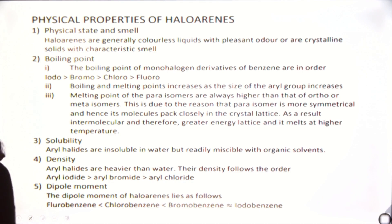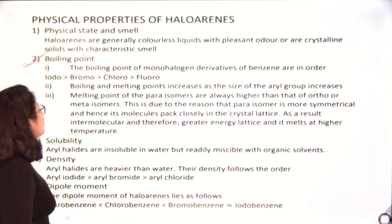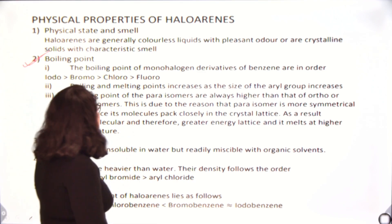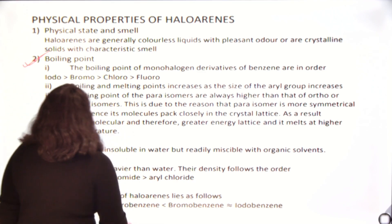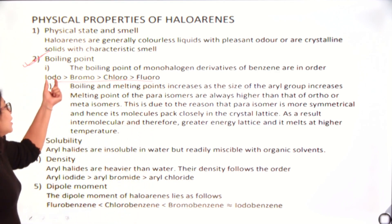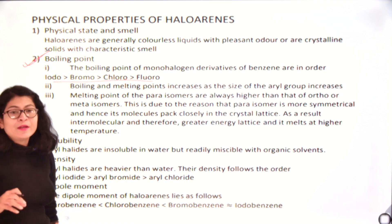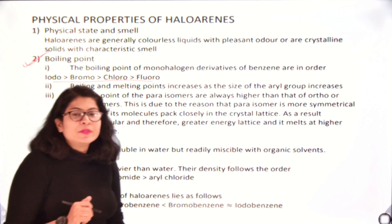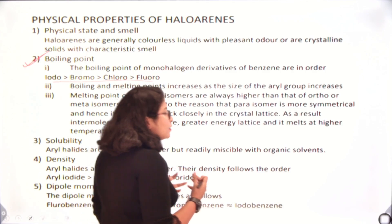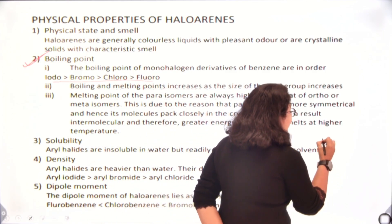Next comes the most important part which is the boiling point. The boiling point of monohalogen derivatives of benzene are in the order: iodo, bromo, chloro, and fluoro. As we move from iodo to fluoro, the size of the halide ion is decreasing. Bigger the size of the ion, more is the van der Waals interaction.